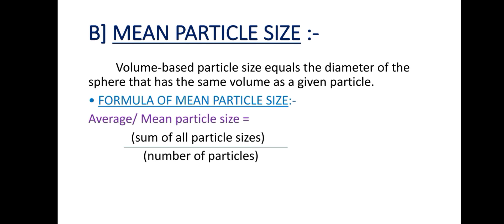Now the point Mean Particle Size. Volume-based particle size equals the diameter of the sphere that has the same volume as the given particle. Here is the formula of mean particle size: average or mean particle size equals sum of all particle sizes divided by the number of particles.